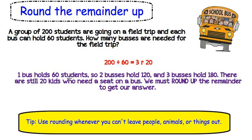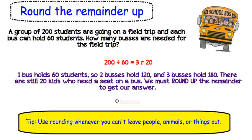One bus holds 60, two buses will hold 120, and three buses hold 180. But there are still those 20 kids who need a seat on a bus. So we have to, in this case, round up the remainder to get our answer. And our answer is going to be 4 buses. We cannot leave those 20 people without a bus or they would get left behind from the field trip.